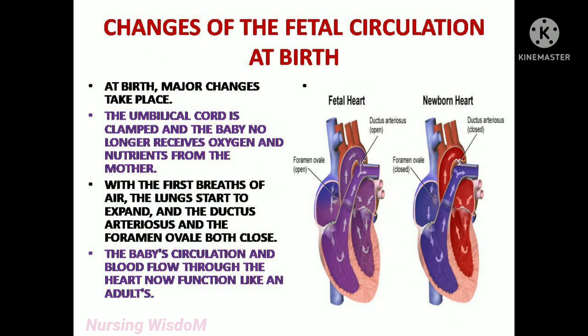At birth, major changes take place. The umbilical cord is clamped and the baby no longer receives oxygen and nutrients from the mother. With the first breaths of air, the lungs start to expand and the ductus arteriosus and the foramen ovale both close. The baby's circulation and blood flow through the heart now function like an adult's.